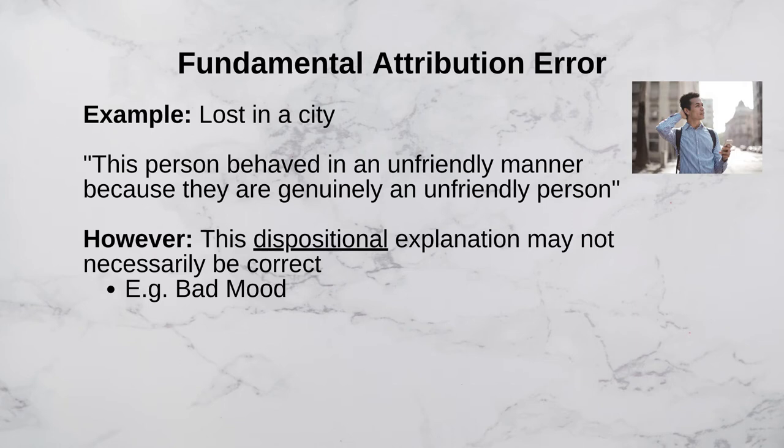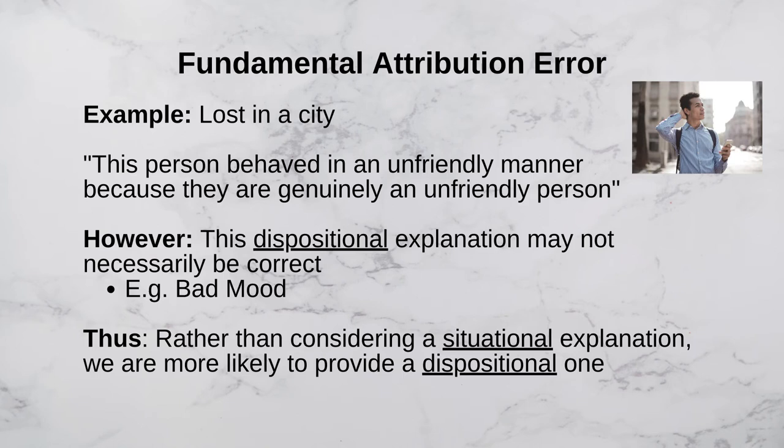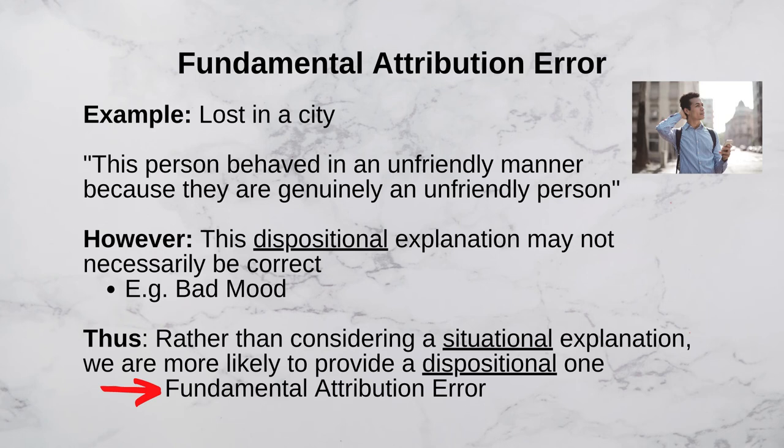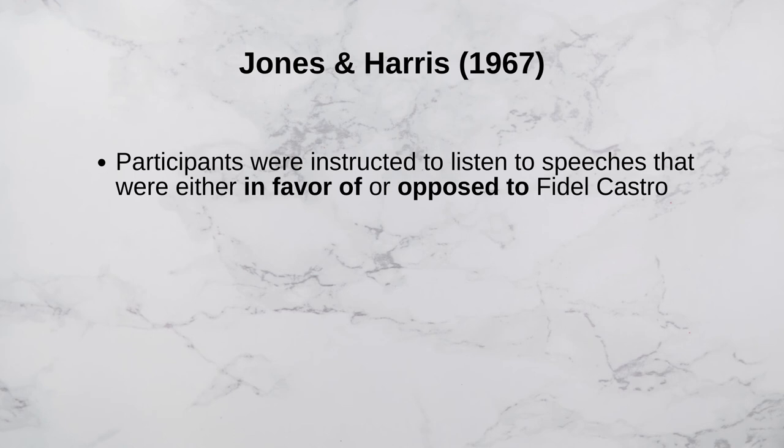Maybe the reason for their behavior is that you caught them in a bad mood because they, for instance, just got fired from their job or because they are in a major fight with their significant other. Thus, rather than considering the possibility of a situational explanation for the behaviors of others, we are often more likely to provide a dispositional explanation. It is this phenomenon that we refer to as the fundamental attribution error.